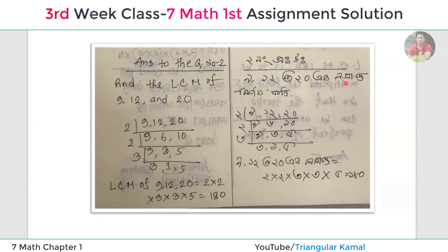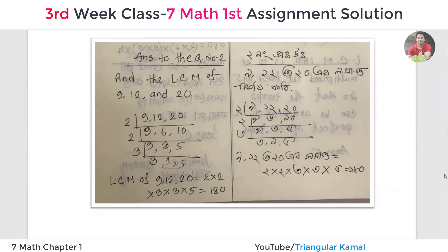The LCM is 180. Now we need to identify which prime factors appear an odd number of times — meaning which digit is a single unpaired factor. The prime factorization of 180 gives: 2, 2, 3, 3, and 5. Here 2 and 3 are in pairs, but 5 is the only single factor. Therefore, multiplying 180 by 5 makes it a perfect square number, since 5 was the only unpaired prime factor.